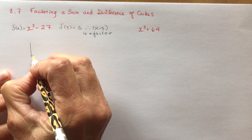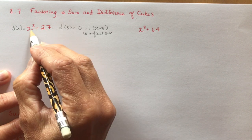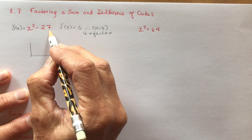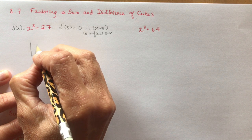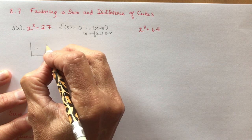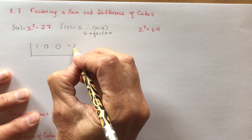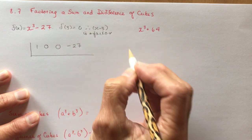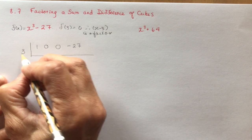And then you can do your synthetic division. Now remember, you have to be careful because there's no squared or x value. We just have the cubic and the constant. So I'm going to write 1 for my x cubed, 0 for my x squared, 0 for my x, and minus 27 for my constant. And then I'm going to put x minus 3 as a factor, so that means I have 3 here.